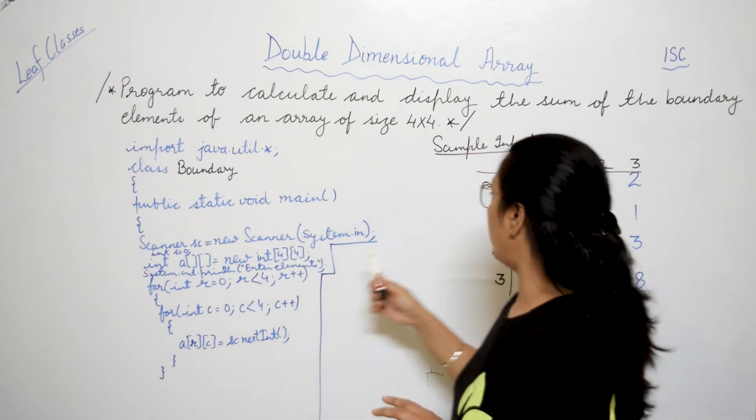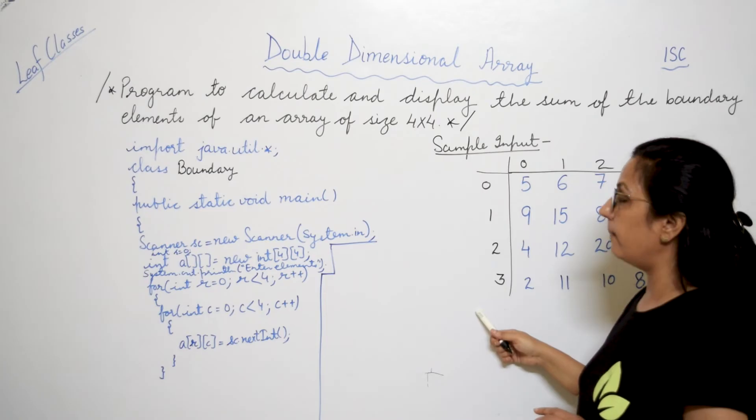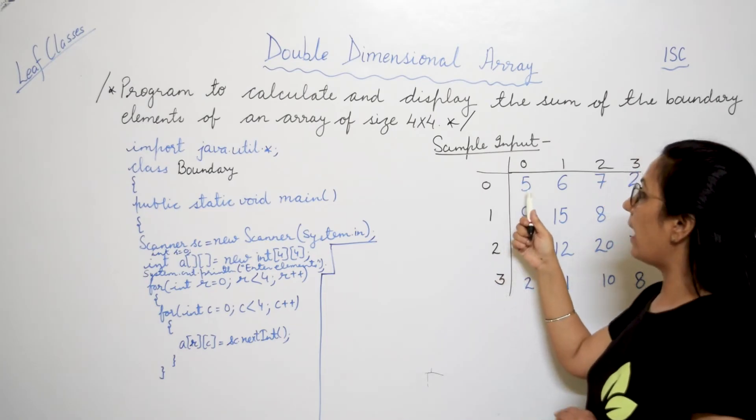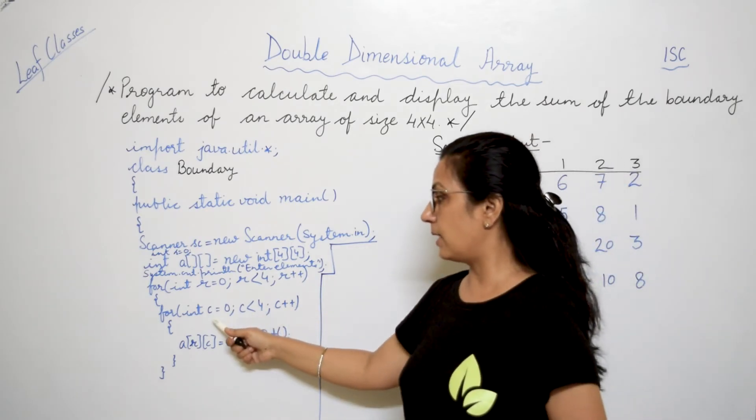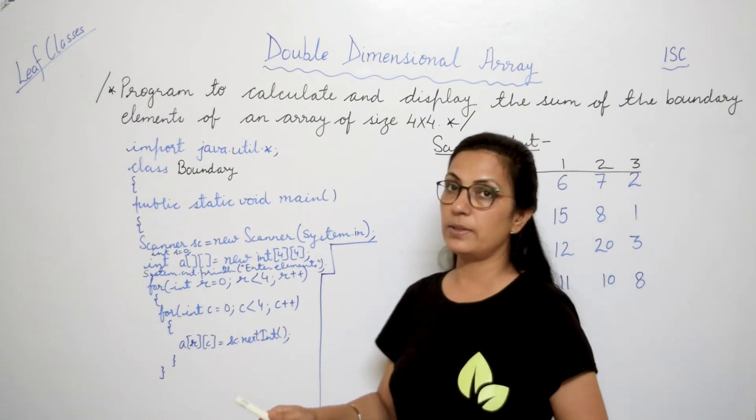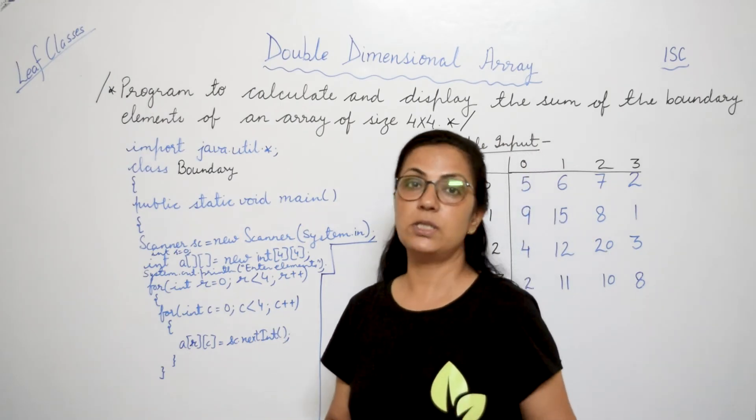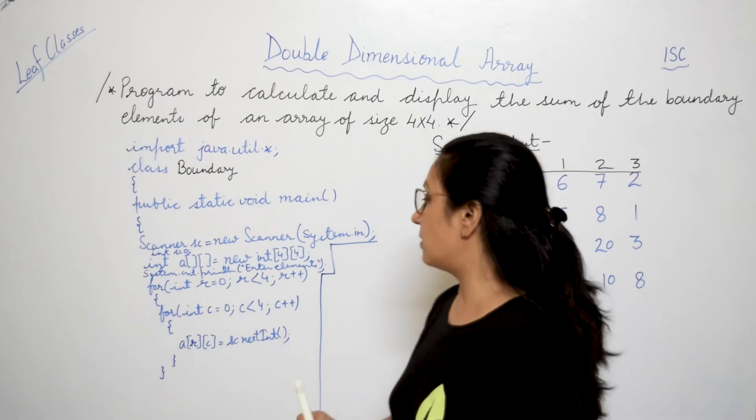So the outer loop, how many rows are there? 0, 1, 2, 3. Four rows are there. And for each row, we have 4 columns: 0, 1, 2, 3. So inner loop is also taken. C equals to 0, C less than 4, C++. Children, again, please watch the videos which are given in the end screen of today's video.